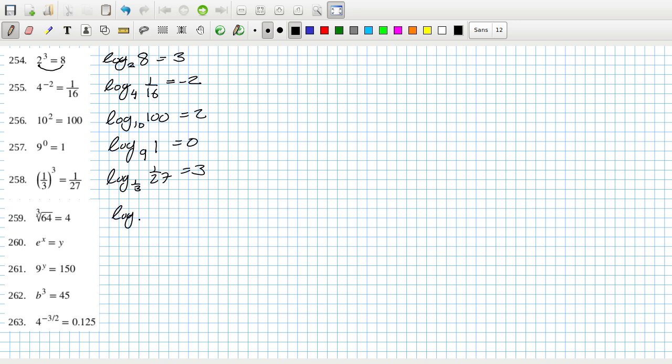Log base 64 of 4 equals a third. Log base e of y equals x. Log base 9 of 150 equals y, and log base b of 45 equals 3. And finally log base 4 of 0.125 equals minus 3 over 2.